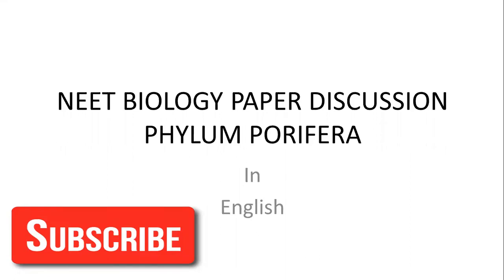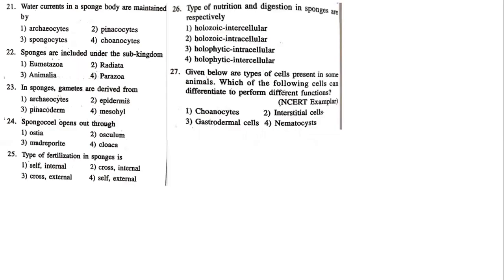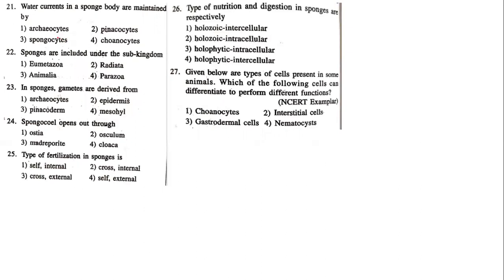Without wasting time, we'll go to the questions. I'm not going to ask very silly questions — only basic conceptual questions where students usually make mistakes. That type of question will be asked in this series. First, we'll have a clear concept. I've taken some material-based questions where students usually make a lot of mistakes. First question: water current in a sponge body is maintained by which type of cell? The options are archaeocytes, pinacocytes, spongocytes, and choanocytes.